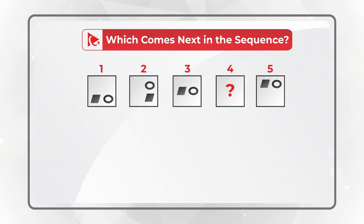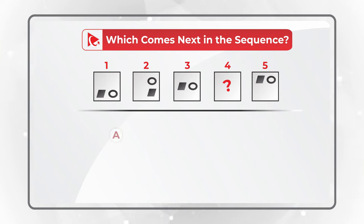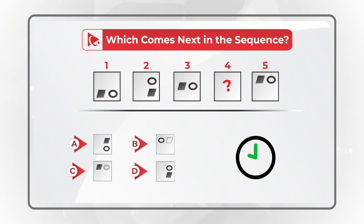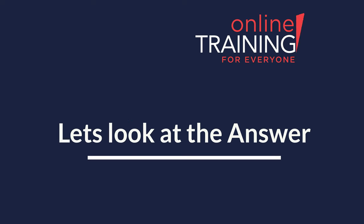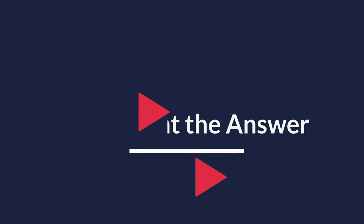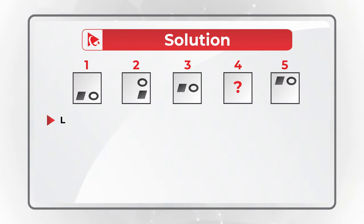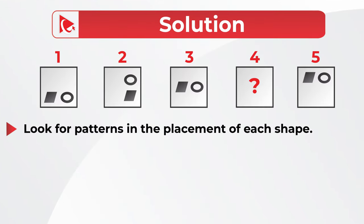You have four different choices: A, B, C, and D. Give yourself a little bit of time, look closely to see if you can get to the correct answer. Let's move forward and get to the correct solution together. My advice as usual: always look for patterns. In this case, the pattern is the location of the smaller shapes inside the square.